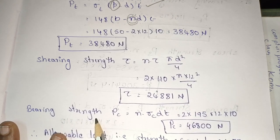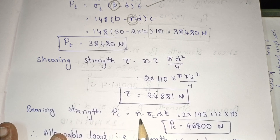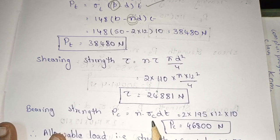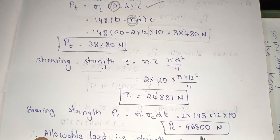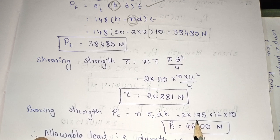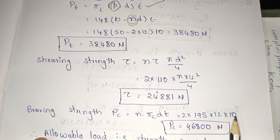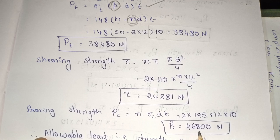Next is bearing strength. pc = n × Sigma C × d × t. So n = 1, Sigma C = 195, d = 12, t = 10. Calculate pc — we get pc = 46800 N.